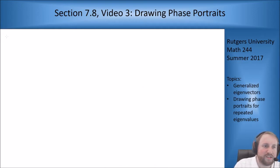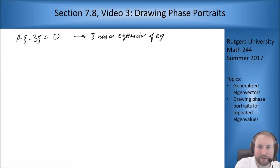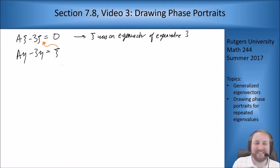The first equation said that 3ξ equals Aξ, and I'm going to rewrite that as Aξ minus 3ξ equals 0. This told us that ξ was an eigenvector of eigenvalue 3. The second equation said that A times η minus 3η equaled ξ, not 0 but ξ. Since it's not 0 but gives me an eigenvector, if I take Aη minus 3η I don't get 0 but I get an eigenvector.